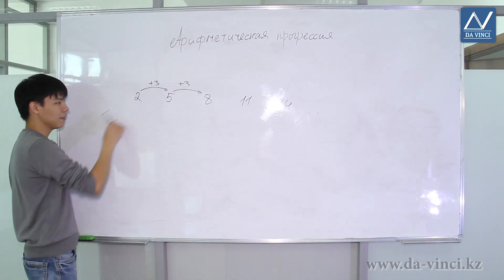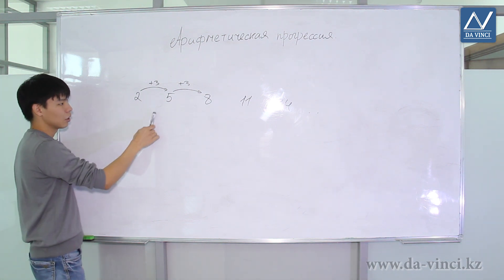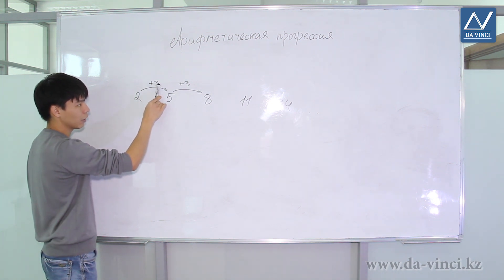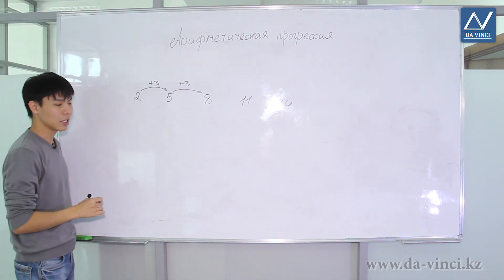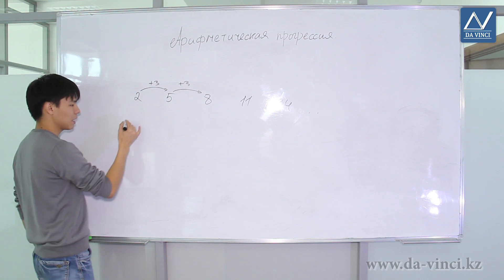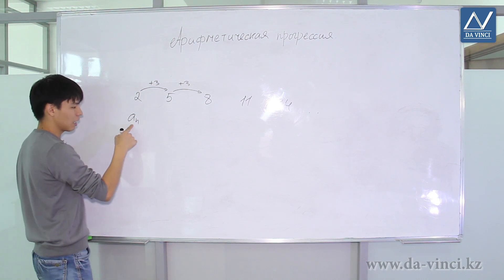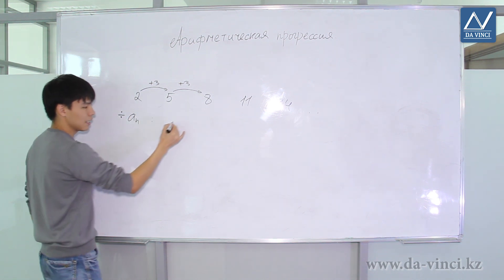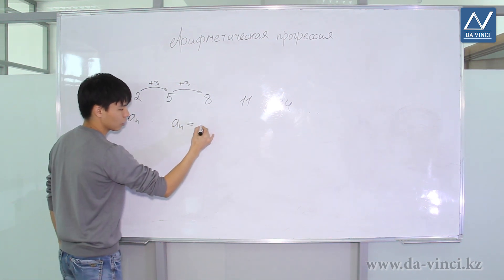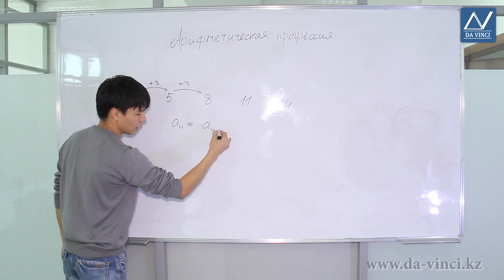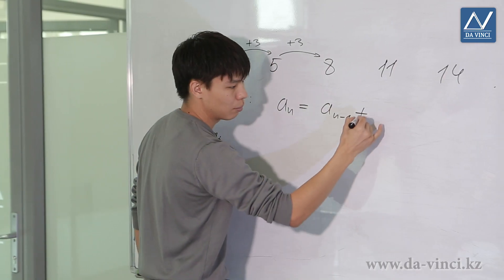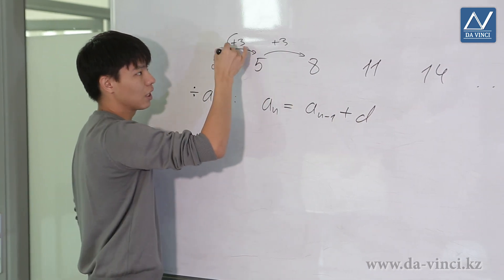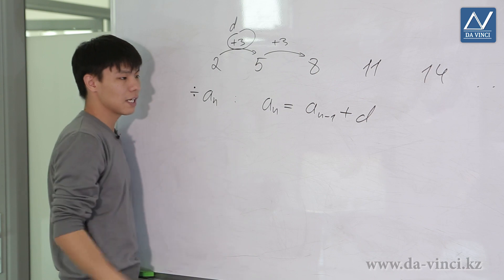Such a sequence which has the property that each subsequent number is equal to the previous one plus some constant number is called an arithmetic progression. It can be written as follows: an is an arithmetic progression denoted by this sign, where an is equal to the previous number an minus 1 plus some constant d. The number d — 3 in this case — is called the difference of the progression.